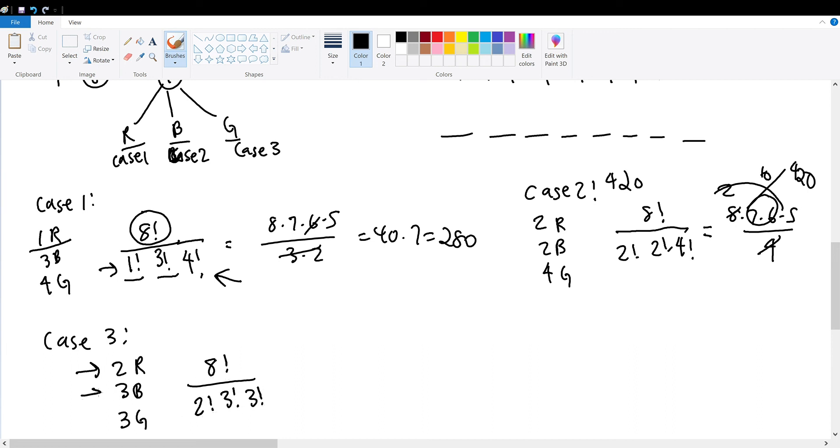This becomes 8 × 7 × 6 × 5 × 4, all over 2 × 3 × 2. 2 × 3 is 6, which cancels with this 6, and 2 × 4 becomes 2, times 5 is 10. 7 × 8 is 56, times 10 is 560.